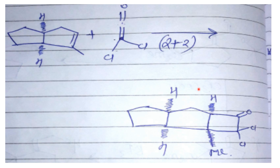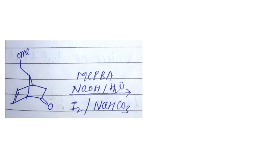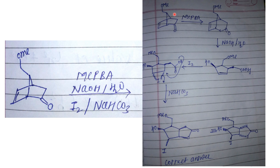The next question involves treatment with mCPBA, NaOH and H2O, then iodine and sodium bicarbonate on this compound. I've uploaded all the mechanism steps here. In the presence of mCPBA, oxygen insertion occurs toward the more substituted substrate side. This is then hydrolyzed to give an alcohol and an acid — both are cis to each other.